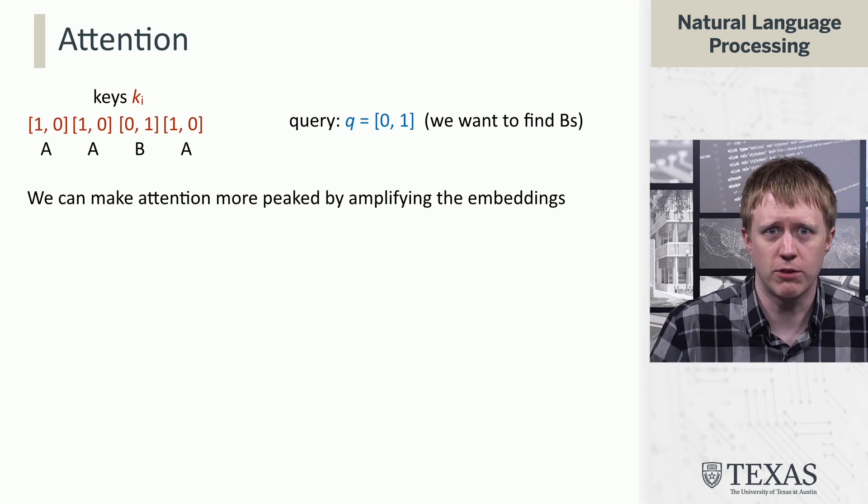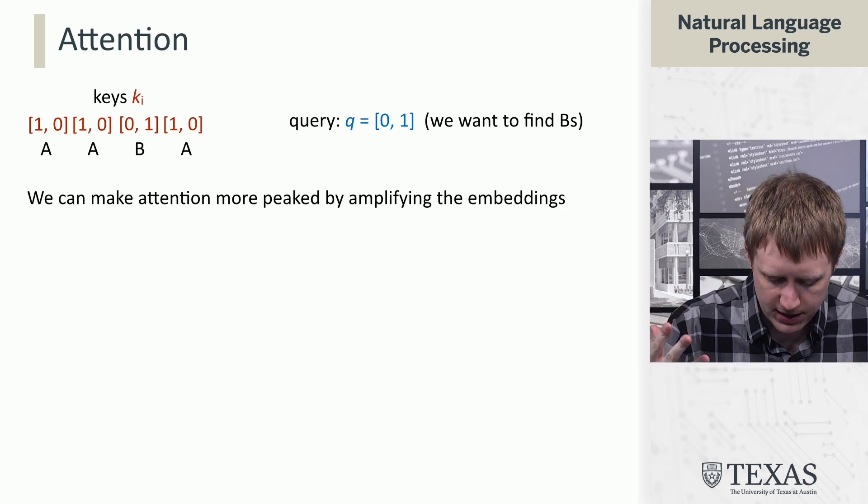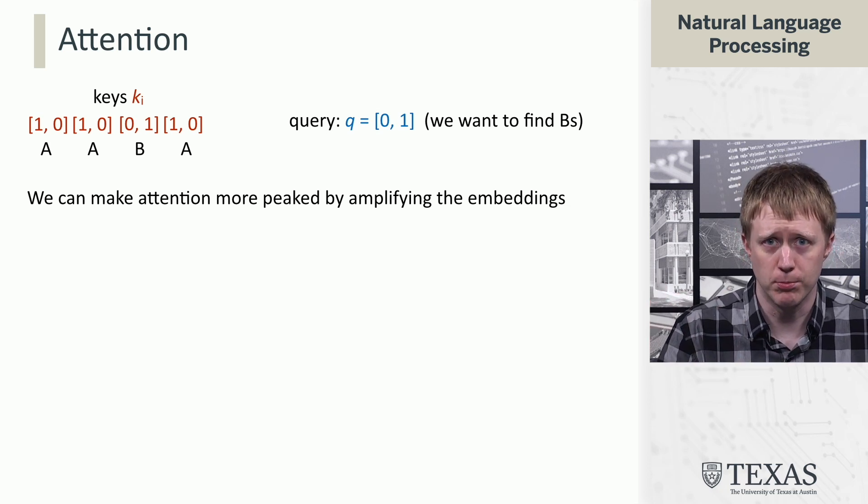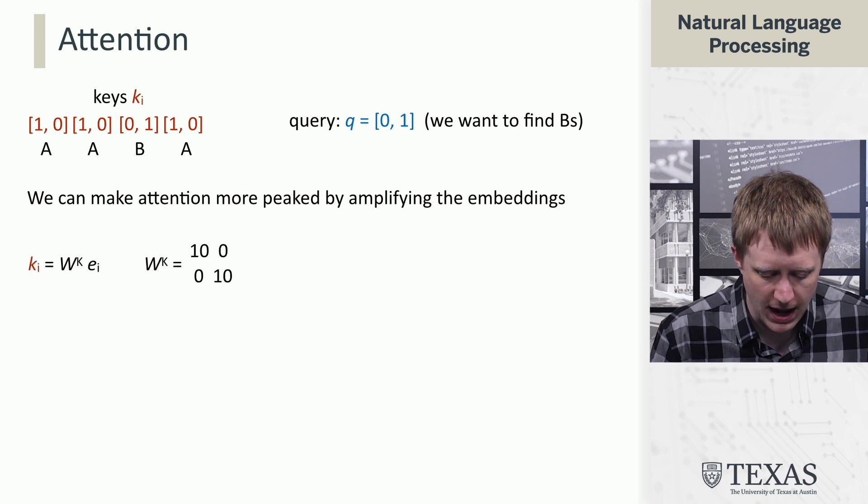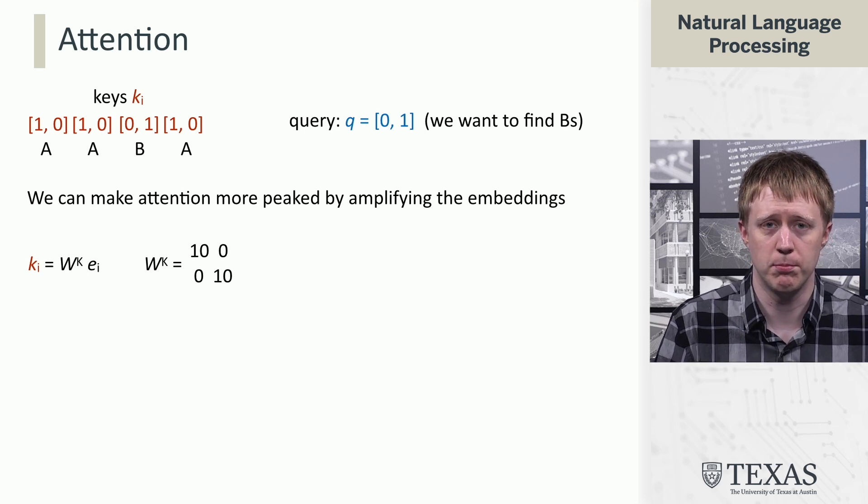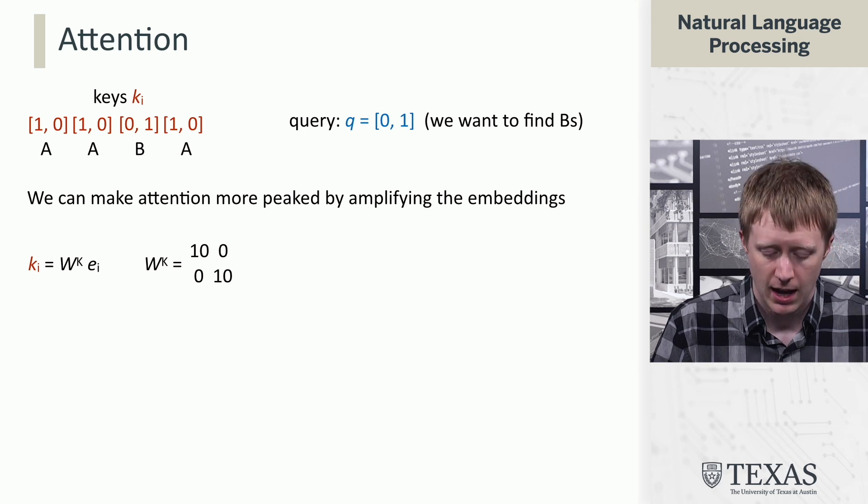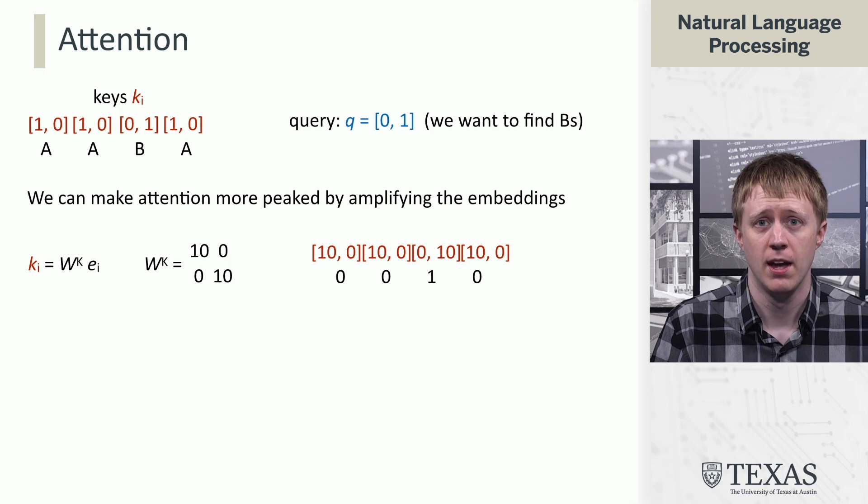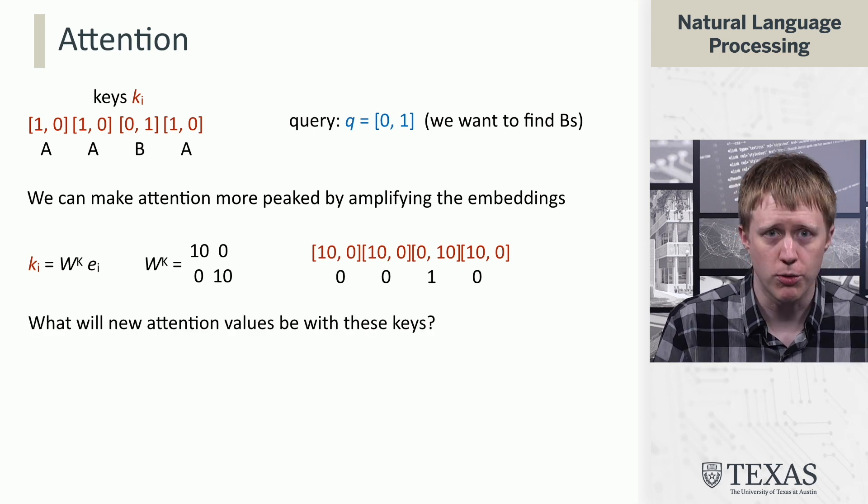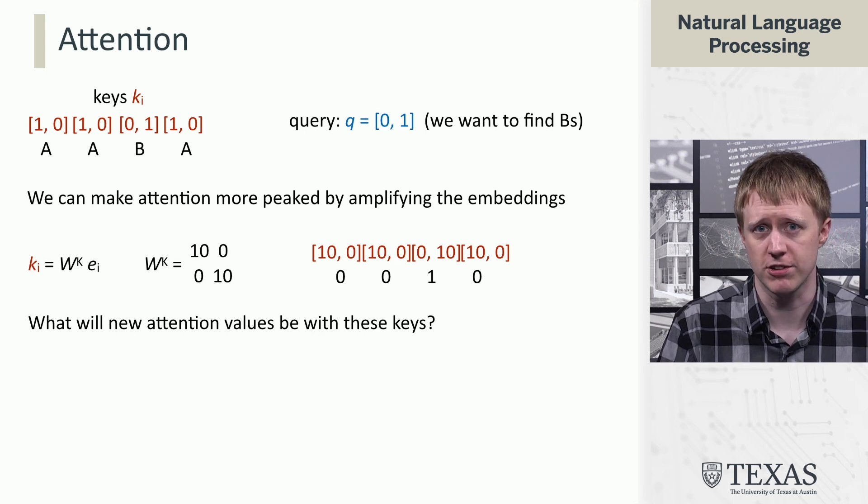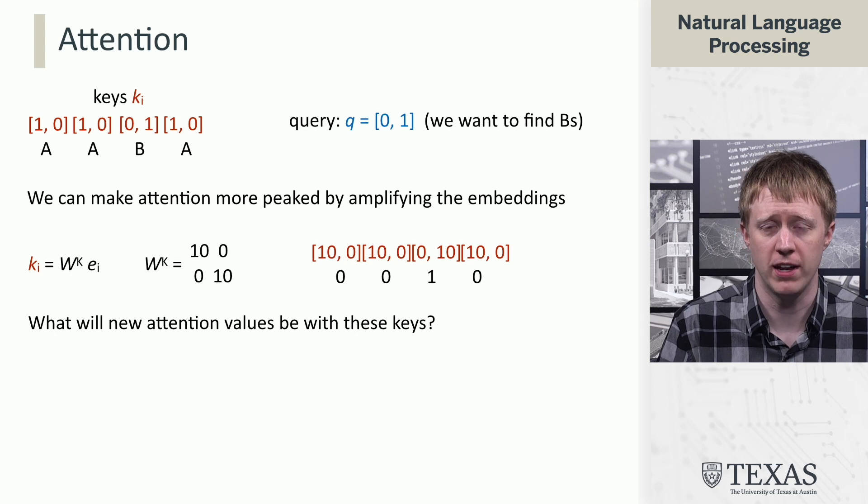So, suppose that we actually really want to make the attention even more peaked. Then, what we might want to do is amplify these embeddings more when we do the attention computation. And so, we can do that by scaling them up by this matrix W_K here, where this is just a diagonal matrix with tens on the diagonal. And so, it's just going to multiply all of the values of the keys by 10. So, now, if you go through the attention computation again, you're going to get something a little bit more peaked. And I'm going to leave that as an exercise for you to do, but you can convince yourself that it's going to give us the same effect, but something even more extreme.